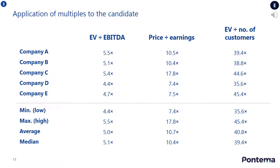Next up, the fifth step in your valuation analysis is to calculate the minimum, maximum, average, and median of the selected peer group for each multiple. Then multiply the target organization's valuation metric with the respective median or average multiple. Remember to differentiate between equity and enterprise multiples. Finally, calculate the implied enterprise and equity value for the target organization. The next three slides show you how to do this.